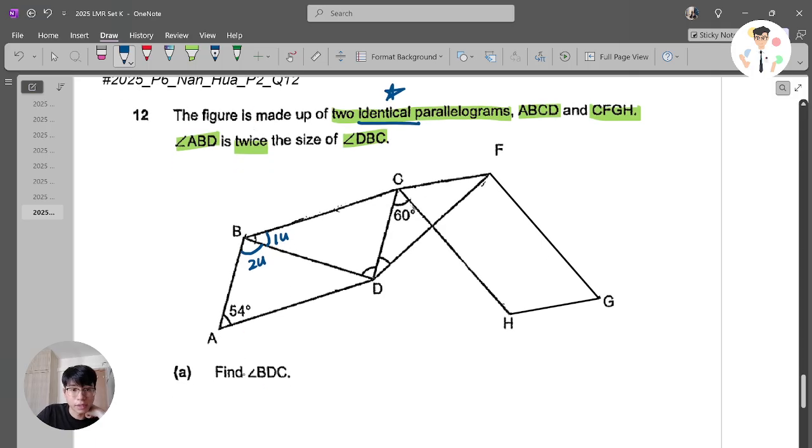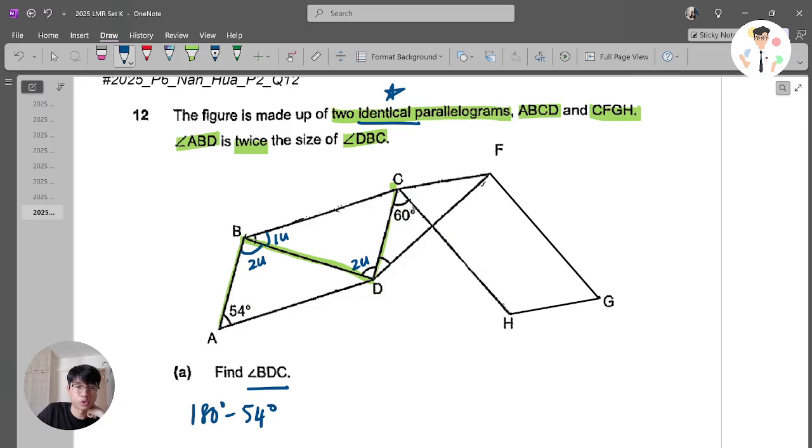Now, I need to find angle BDC. BDC means here, right? It means here means the two units. Because this is a Z shape, I know that this part is a Z shape. So how do I first find what is the angle here? The whole thing here. I know I can use 180 minus 54, right? Because this is how I look for the angle here. I know here plus here is 180. But since I have three units here, so I just divide by three.